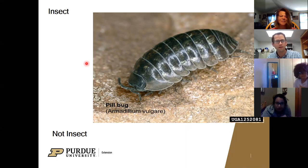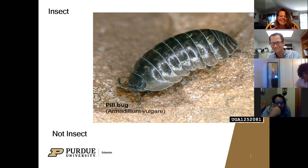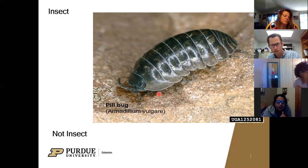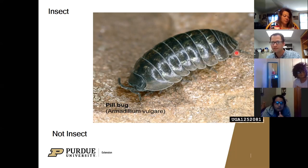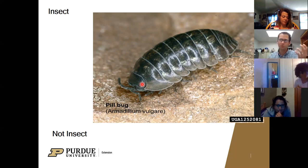Put a thumbs up if you think the pill bug is an insect. Well, insects have six legs - kind of hard to see the legs here, but I see one, two, three, four, five, six, seven on one side alone - so we've got a lot more than six legs. We also don't really have three body segments. So a pill bug is not an insect, even though we call it a bug.